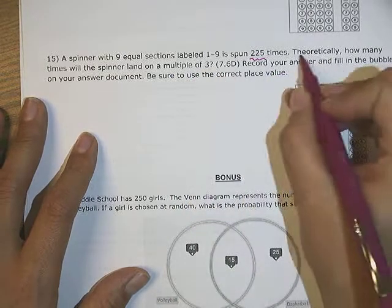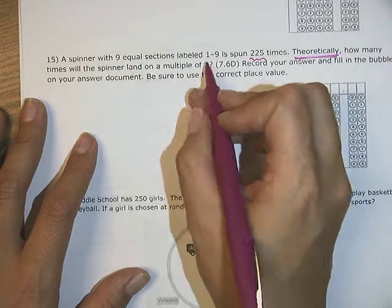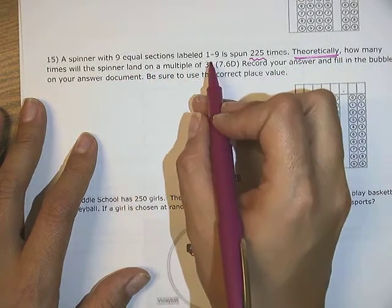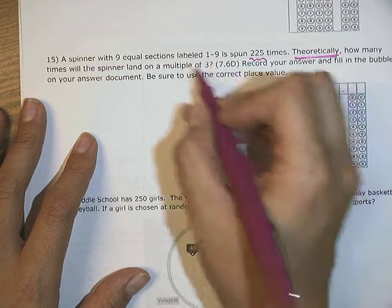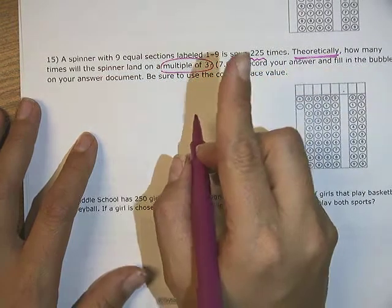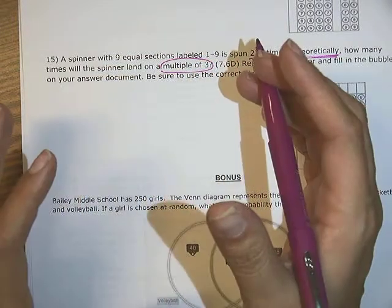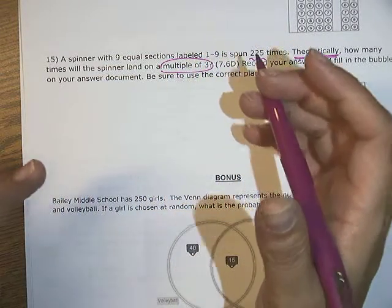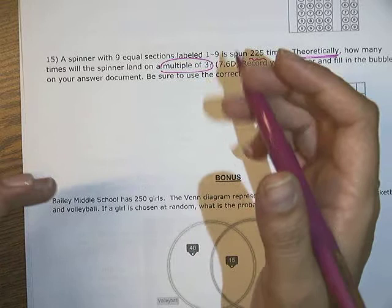So we're talking theory. If I have nine sections labeled one through nine, and we're looking for a multiple of three. So one is not a multiple of three. It has to be a number that's divisible by three, not a factor or anything. Actually, I guess they are similar to factors.